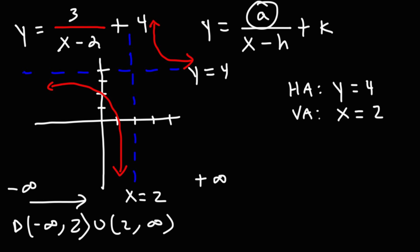And you can see it on the graph. x can take on any value except 2. If you plug in 2, you get a 0 in the denominator of the fraction, which will make it undefined.